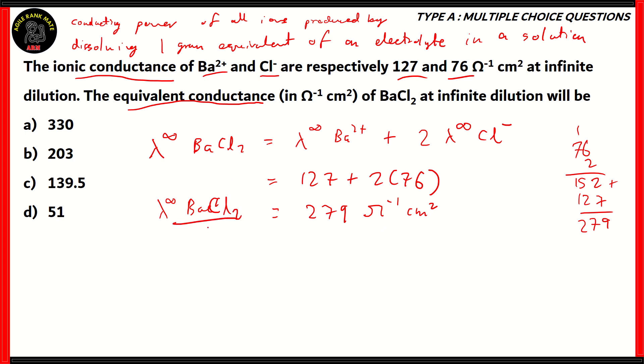Add that with 127 and you get 279 ohm inverse centimeters squared as the conductance of BaCl2. However, this particular answer is for complete molecule, so it uses molecular weight. When it comes to equivalent weight, we've always known that equivalent weight is calculated as a fraction of molecular weight. Equivalent weight is basically molecular weight divided by 2.